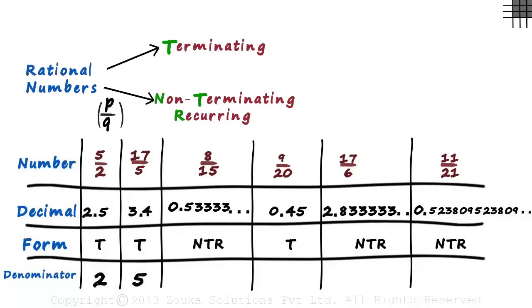We reduce the denominators to its prime factors. The denominator of the third number is 15. In terms of its prime factors, it can be written as 3 times 5. What about 20? It can be written as 2 squared multiplied by 5. 6 can be written as 2 times 3 and 21 can be written as 3 times 7. That's all we had to do. Reduce the denominators to its prime factors.